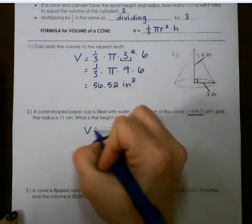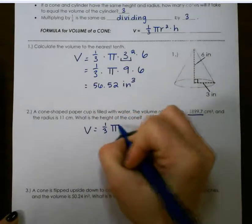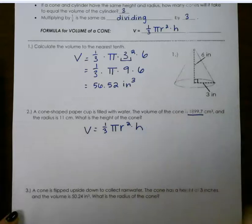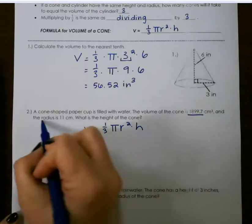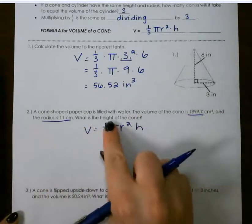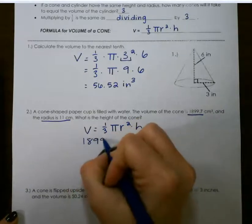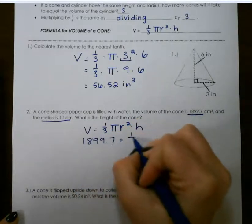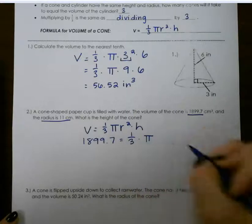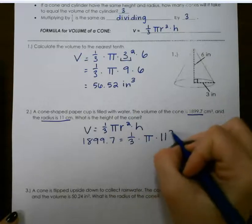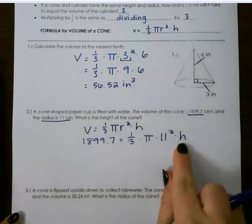So our formula, again, is 1 third pi r squared times height. But this time, we're looking for the height. So if the volume is 1,899.7, we plug everything in that we know, but we're missing h.